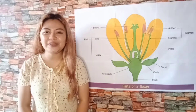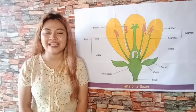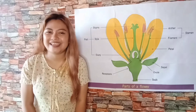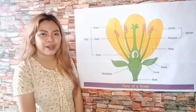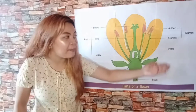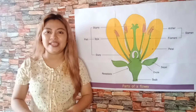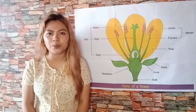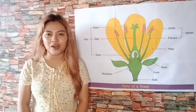Today we're going to be learning about the reproductive parts of a flower and their functions. I have here an image of a flower and its four major parts, namely the sepal, petal, stamen, and pistil. We're going to be discussing each one of them.